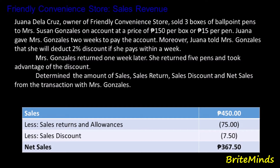From the illustration: Juana de la Cruz sold three boxes of ballpoint pens to Mrs. Gonzalez on credit at 150 pesos per box or 15 pesos per pen. She gave credit terms of a 2% discount if paid within seven days. Another piece of information: Mrs. Gonzalez returned five pens one week later and took advantage of the discount. We need to determine the amount of sales, sales return, sales discount, and net sales from this transaction.